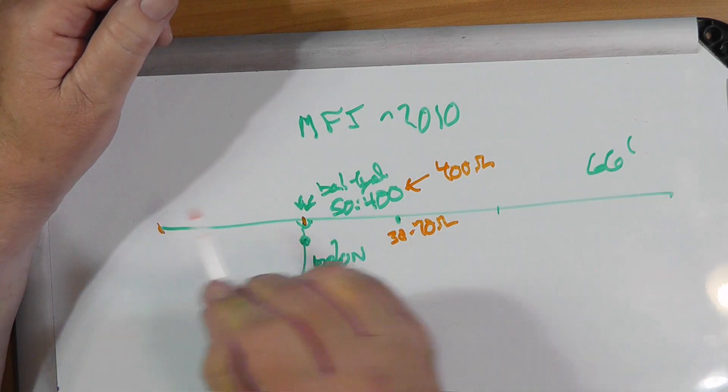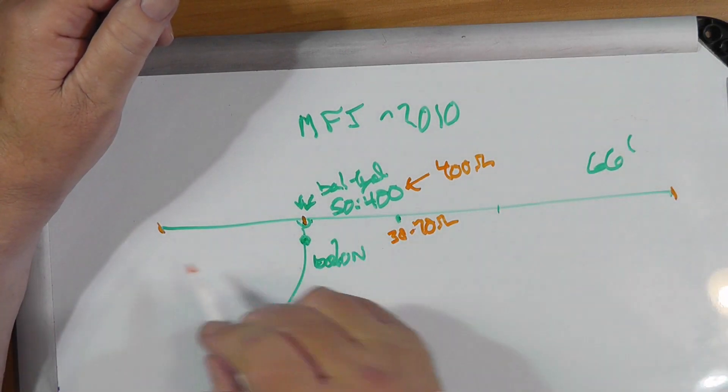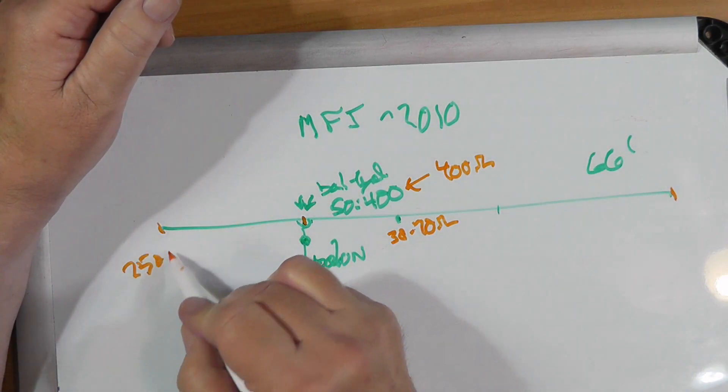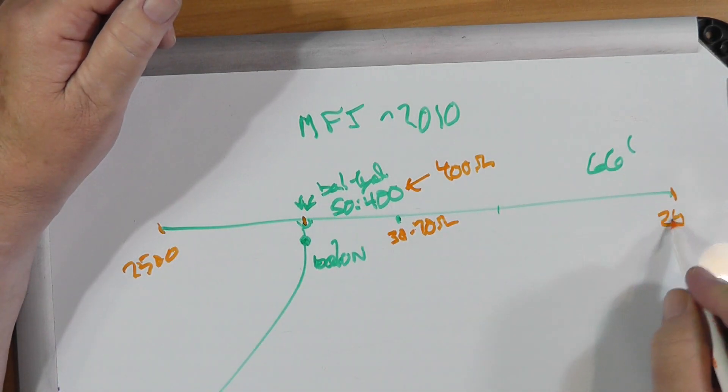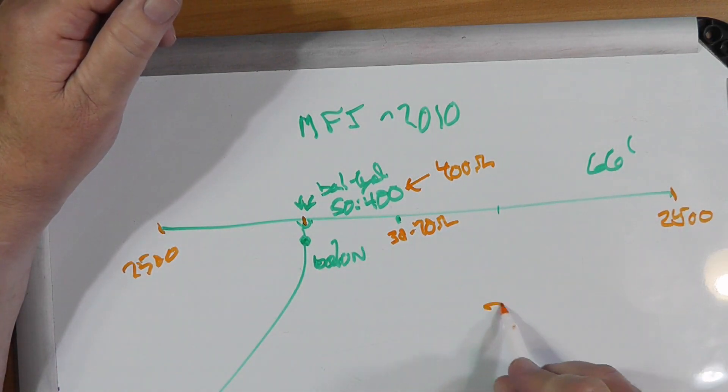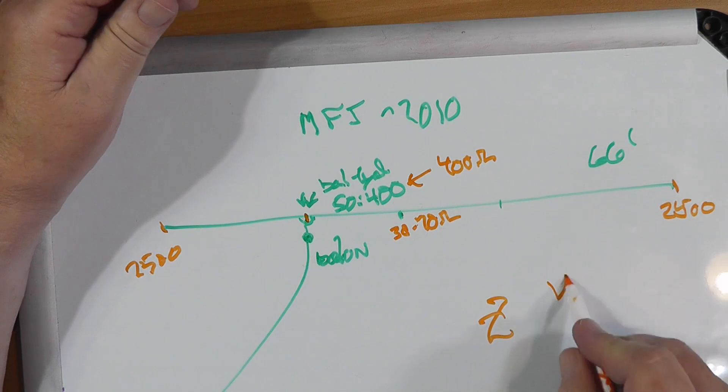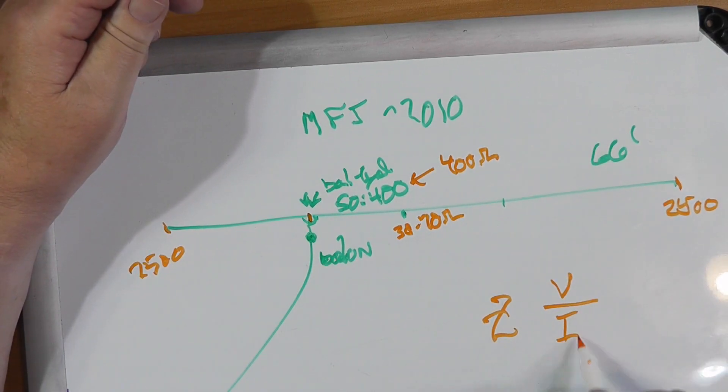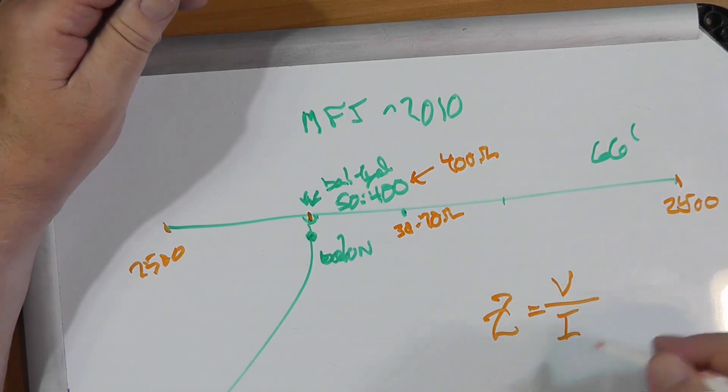If you feed it over here at the one-third point, the impedance is going to be on the order of 400 ohms. If you go all the way out here and feed it at the end, you're looking at about 2,500 ohms. Now, remember that impedance is the ratio of the voltage to the current, with phase angles, real parts, imaginary parts. It could be inductive, it could be capacitive, it could be resistive.